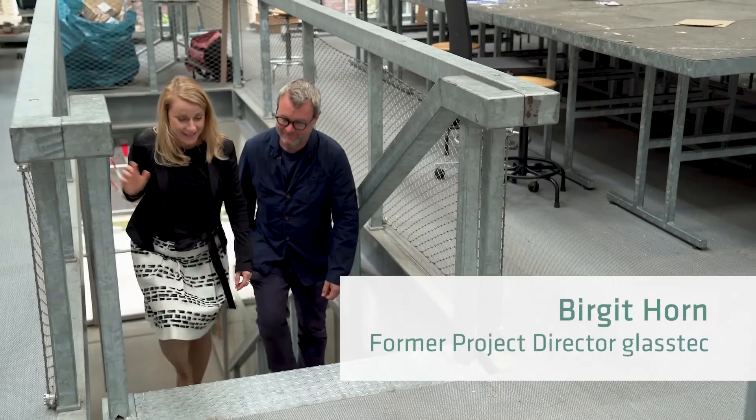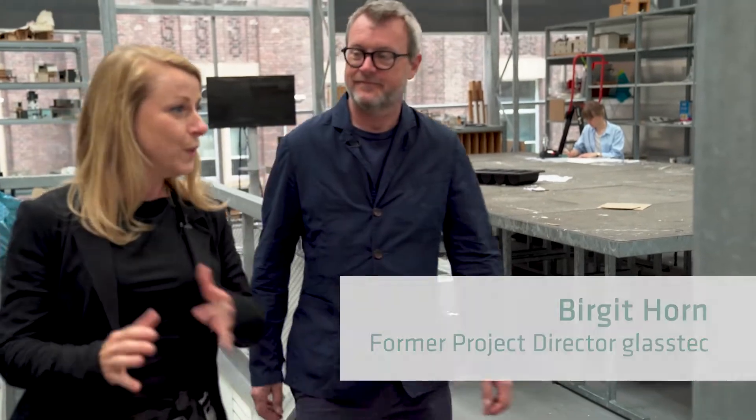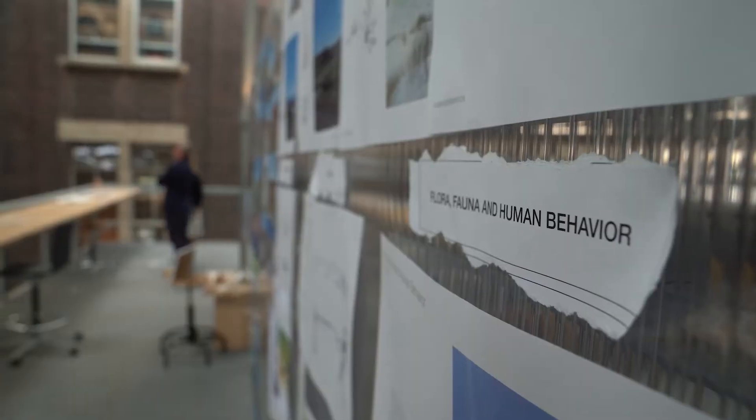So James, the Institute of Architecture here at the Technical University of Delft, where is it positioned in the world of architecture? What is your focus here? Well, I mean it's an amazing school. It's over 100 years old, it has two and a half thousand students. It's a significant university globally. It's ranked second in the world in the School of Architecture.